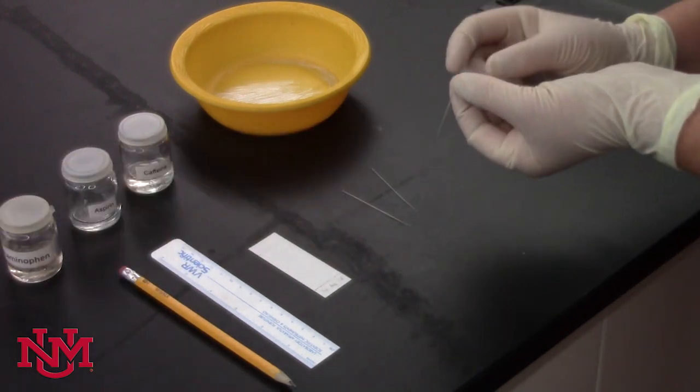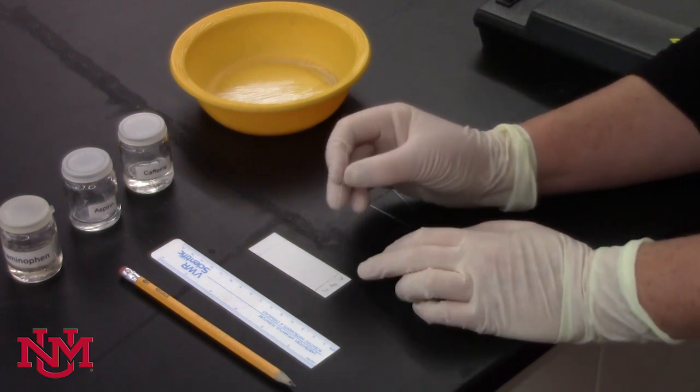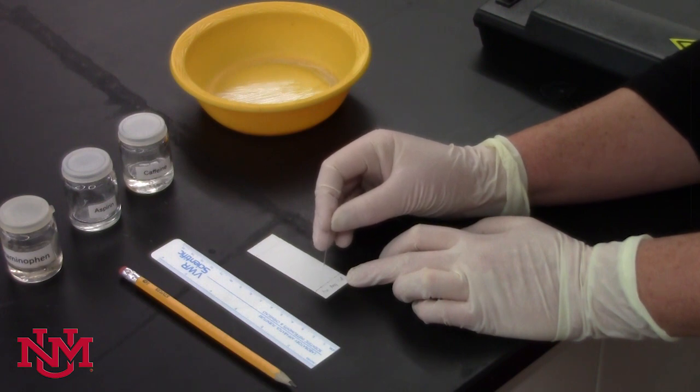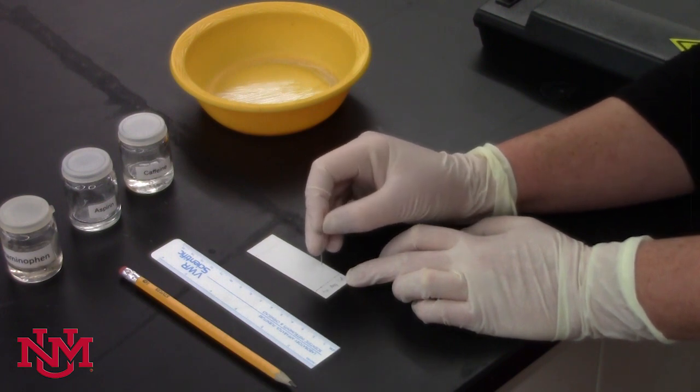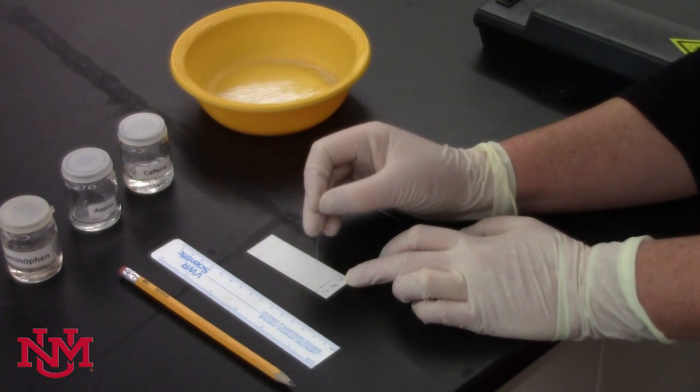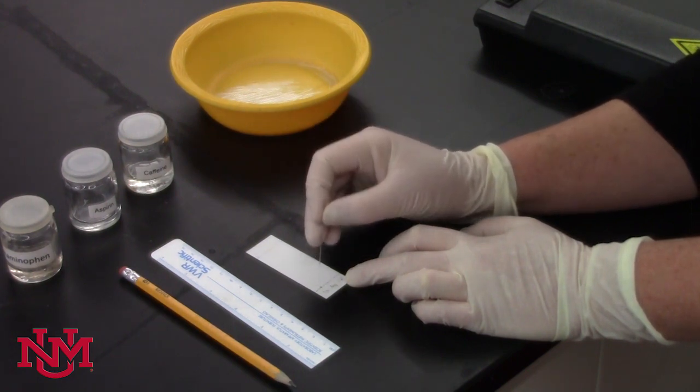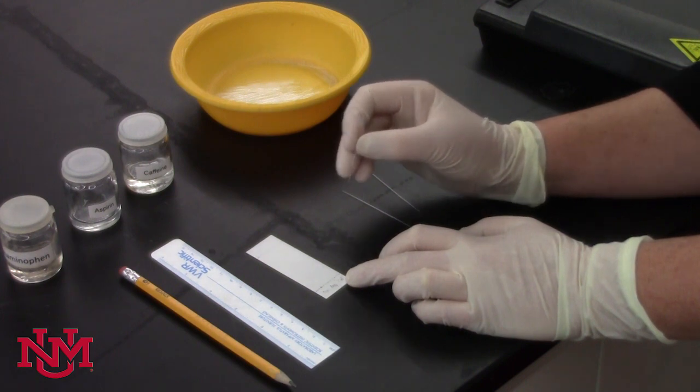After you close the jar, take your sample of acetaminophen and barely touch the end of that glass tube to the dot you've labeled acetaminophen. You'll see it darken just temporarily, and you'll want to touch the plate a few times. This will ensure that you have transferred enough sample to be analyzed.